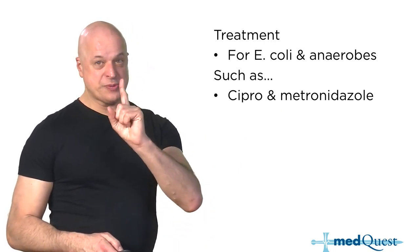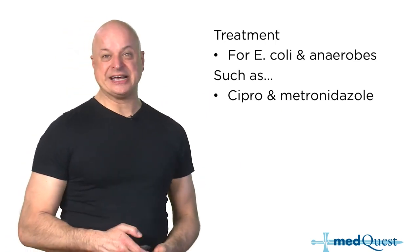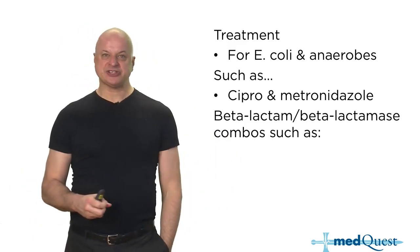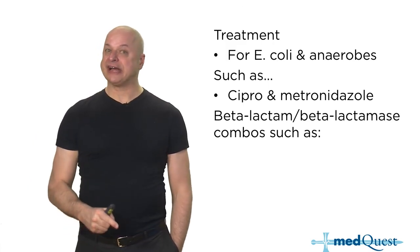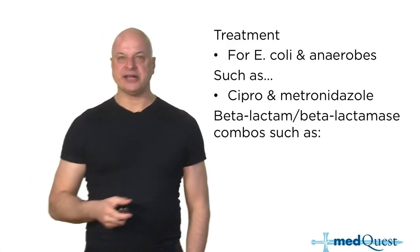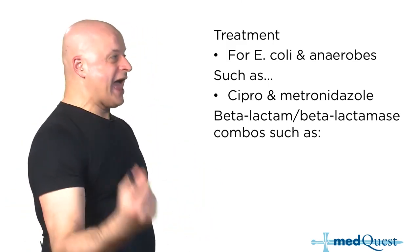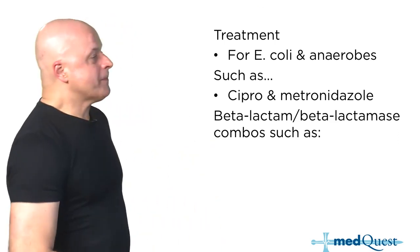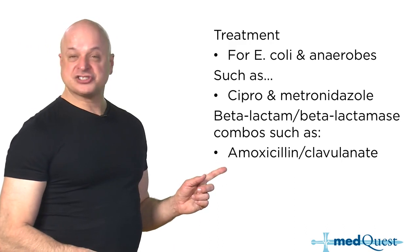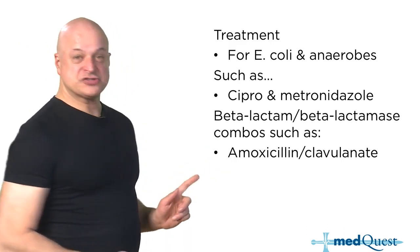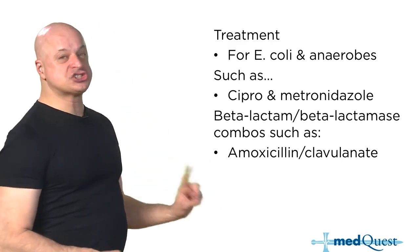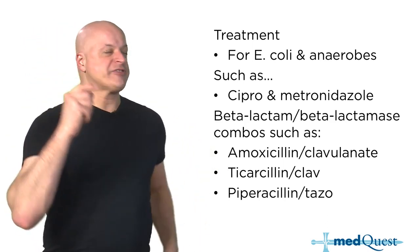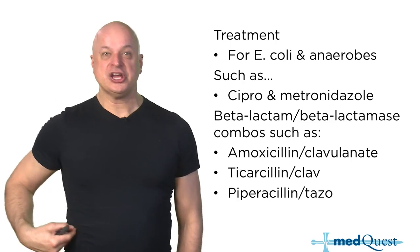Levofloxacin will cover anaerobes by itself, so you can use it as a single agent. Alternatively, the beta-lactam/beta-lactamase combinations — amoxicillin-clavulanic acid (Augmentin), ampicillin-sulbactam, ticarcillin-clavulanic acid, and piperacillin-tazobactam — have at least as good anaerobic coverage as metronidazole. That's why they can be used for abscesses, sinuses, and lung abscesses. For diverticulitis, they're all about the same.